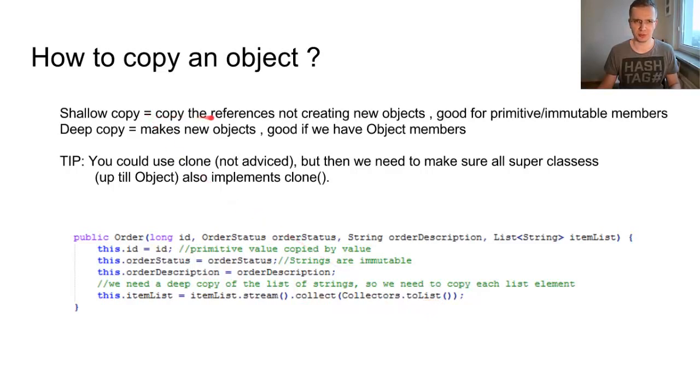So the shallow copy copies the reference, not creating new objects. It is good for primitive and immutable members. But the deep copy makes new objects, which is good when we have object members like here. One tip: we could also use the clone method, but it's not advised because we need to make sure that all the super classes up to the Object class should implement the clone method as well.